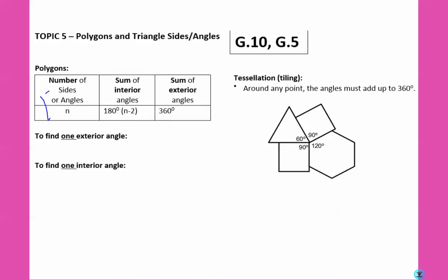For polygons, the number of sides or angles is represented by the letter N. The formula for the sum of the interior angles is always 180 degrees times N minus 2, and the sum of the exterior angles is always 360 degrees, no matter how many sides there are.